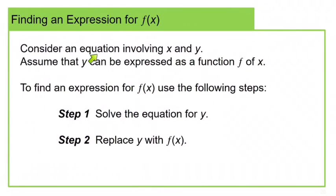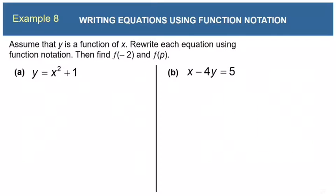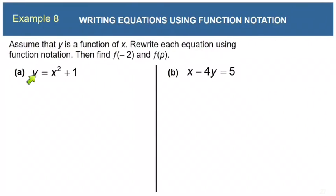Now we're going to take an equation involving both x and y and write it in function notation. To do that, we solve the equation for y and then replace y with f of x. This is example 8. It says assume y is a function of x; rewrite each equation using function notation, then find f of negative 2 and f of p. The first equation, y equals x squared plus 1, is already solved for y, so we replace y with f of x: f of x equals x squared plus 1.